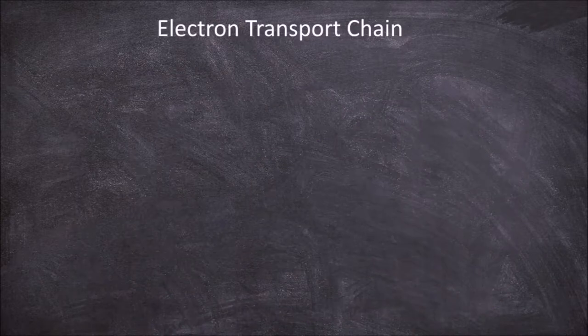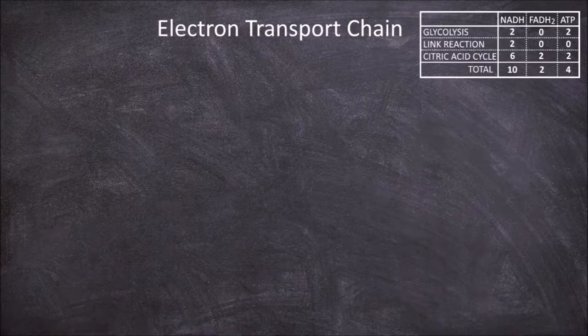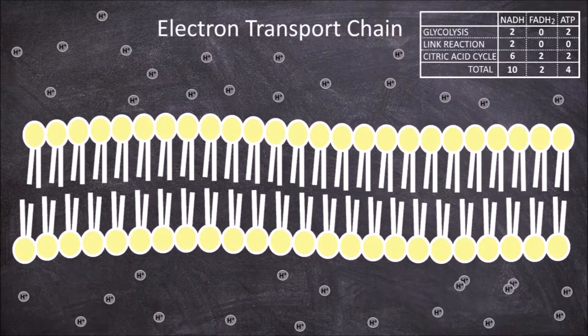At the end of the combined steps of glycolysis, the link reaction, and the citric acid cycle, we were left with 10 NADH and 2 FADH2s. During the electron transport chain, these NADHs and FADH2s are used to create a hydrogen concentration gradient between the mitochondria matrix and the intermembrane space.